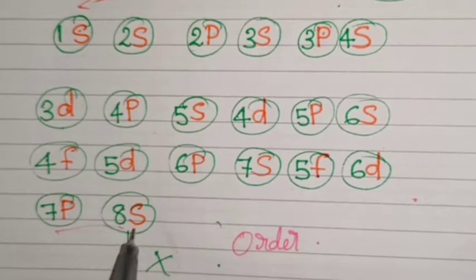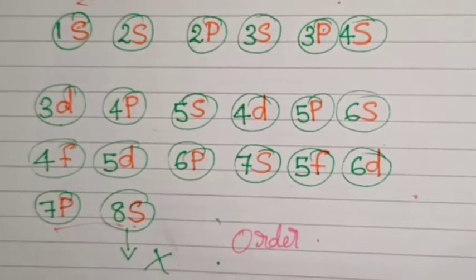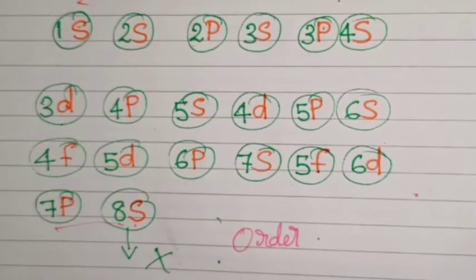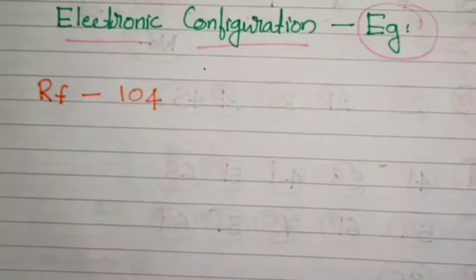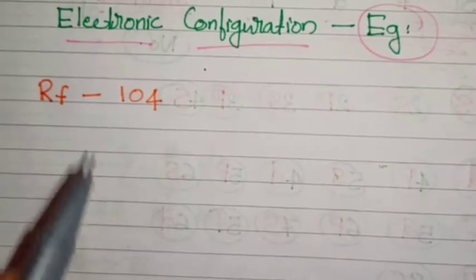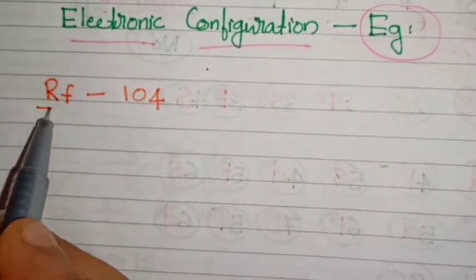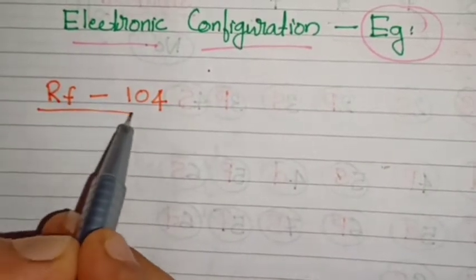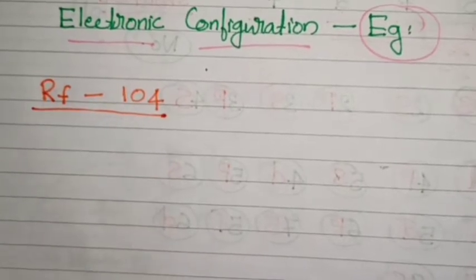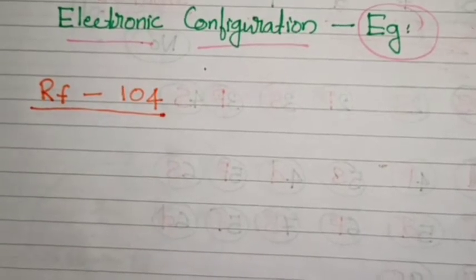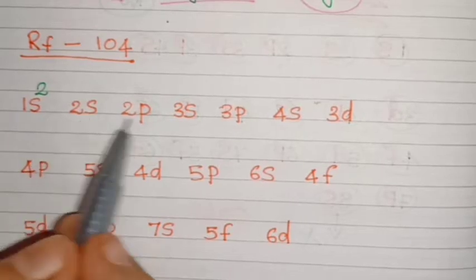We are going to talk about heavy elements in electronic configuration, that means atomic number greater than 100. This element is Rutherfordium, Rf, with atomic number 104. Let's see how to write the electronic configuration.